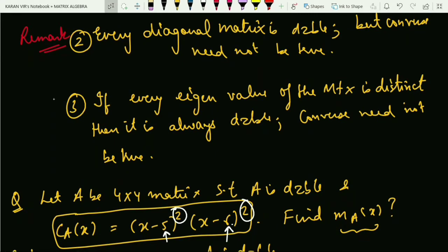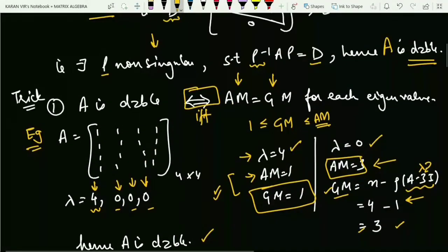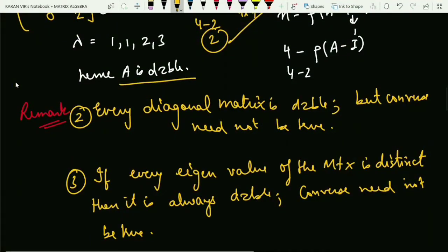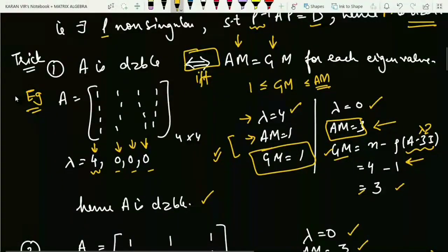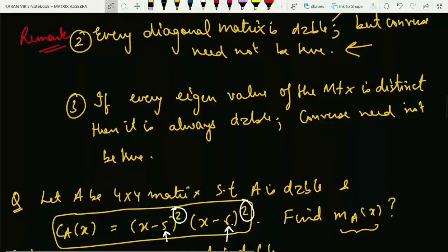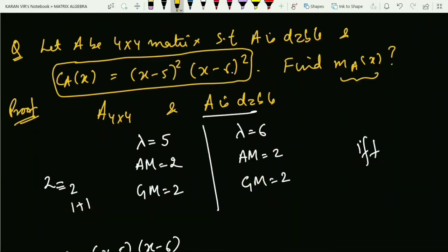A few remarks: First, every diagonal matrix is diagonalizable, but the converse is not true — if a matrix is diagonalizable, it need not be a diagonal matrix, as seen in the first example. Second, if every eigenvalue of a matrix is distinct, then it is always diagonalizable — and again the converse need not be true: a diagonalizable matrix need not have all distinct eigenvalues, as seen in the first example where eigenvalues were 4, 0, 0, 0.